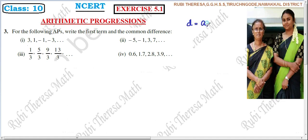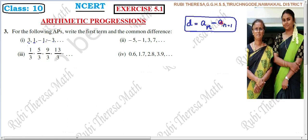So, any one term in the sequence is obtained from the previous term. If you are choosing any term AN, that term minus the previous term AN minus 1 will be the difference D. So if we choose the second term, second term minus first term is the difference. Third term minus second term is the difference. Fourth term minus third term is the difference. So AN minus AN-1 equals D.